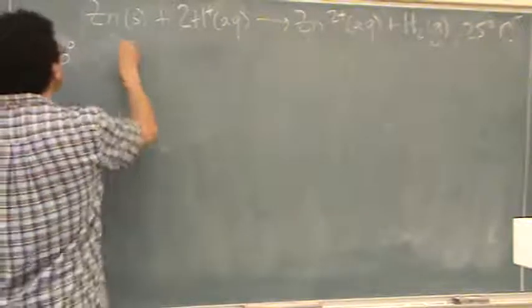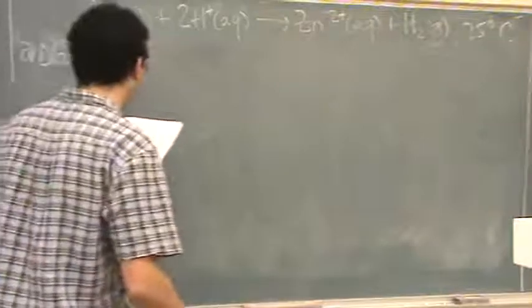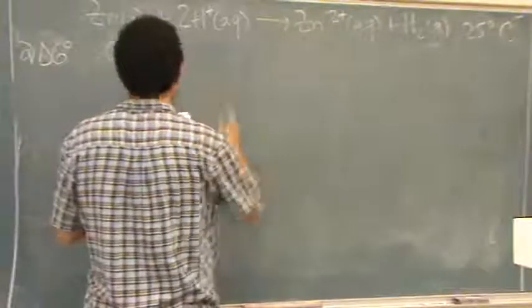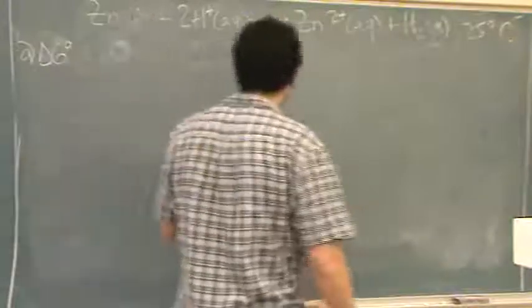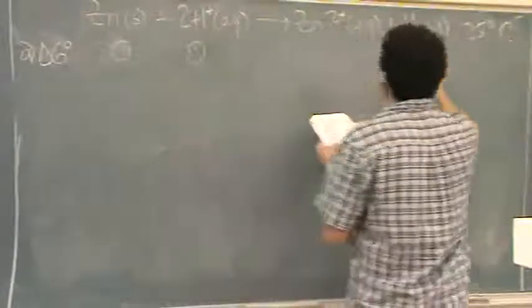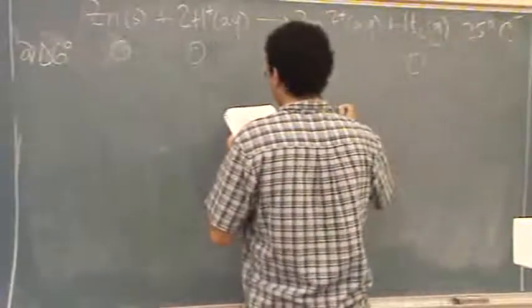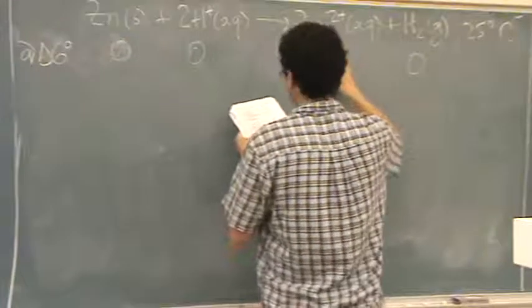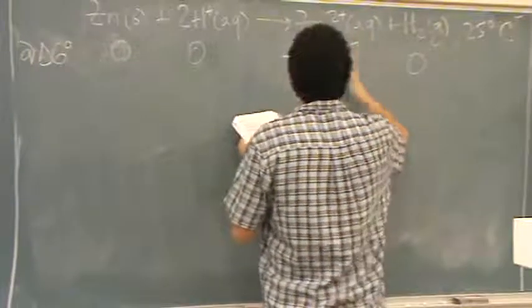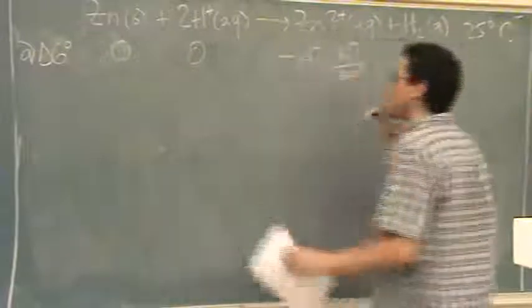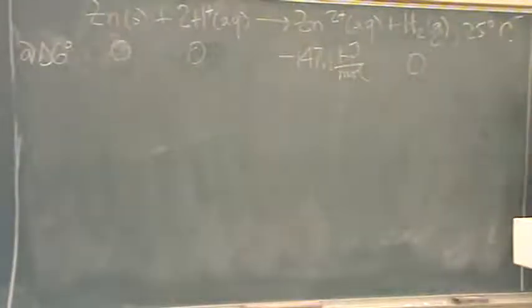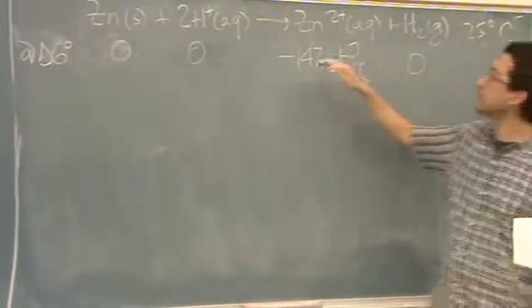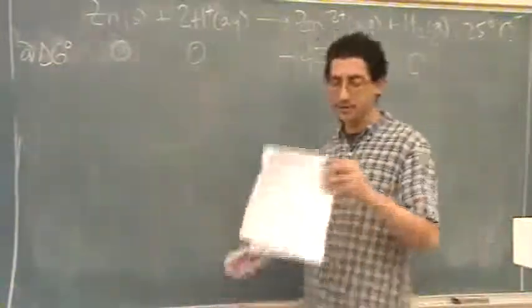It says this is zero. It says the H plus is zero. It says the H2 is zero. And it says this one is minus 147.1 kilojoules per mole. Why are the zeros there? They're elemental. Delta G and delta H are the same. If anything is in its elemental state, it will be zeros.